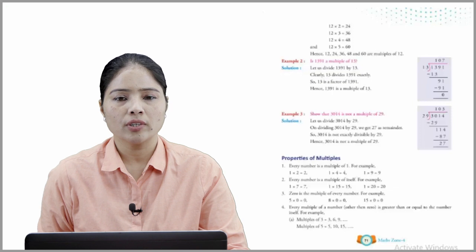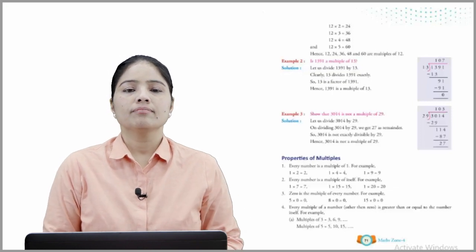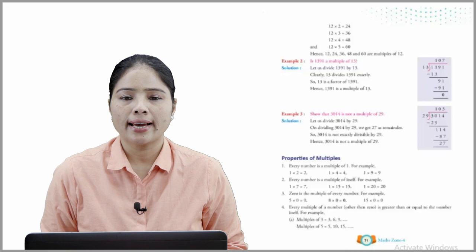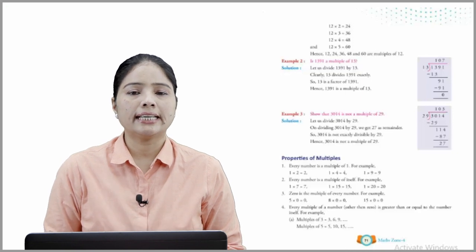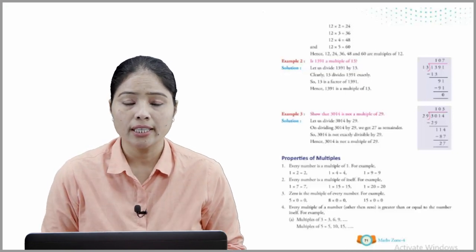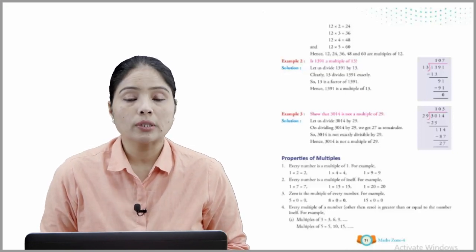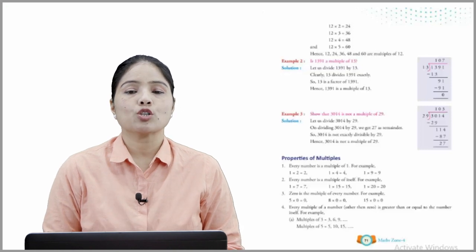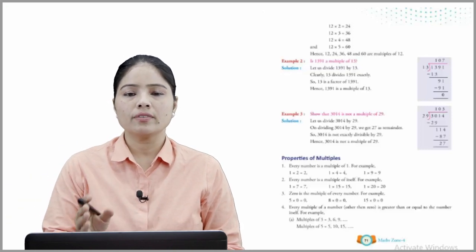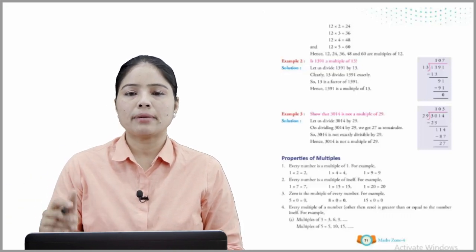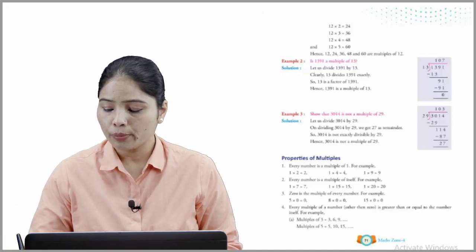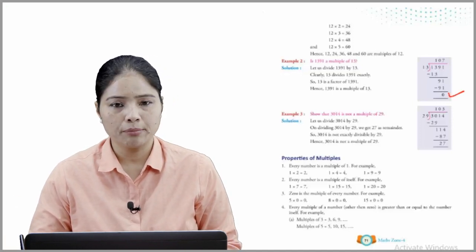Example 2: Is 1391 a multiple of 13? Let's divide 1391 by 13. Clearly, 13 divides 1391 exactly, so 13 is a factor of 1391. Hence, 1391 is a multiple of 13, because there is no remainder.